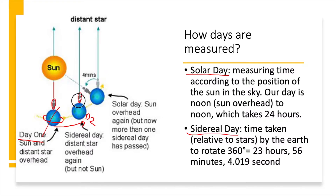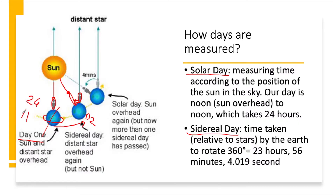The Earth needs to rotate some extra angle so that the Sun's rays are overhead again. Humans have invented the watch and framed time in such a way that when the Sun is overhead on one day, it is again overhead the next day. This duration is framed so that it takes 24 hours, and that is called the solar day.